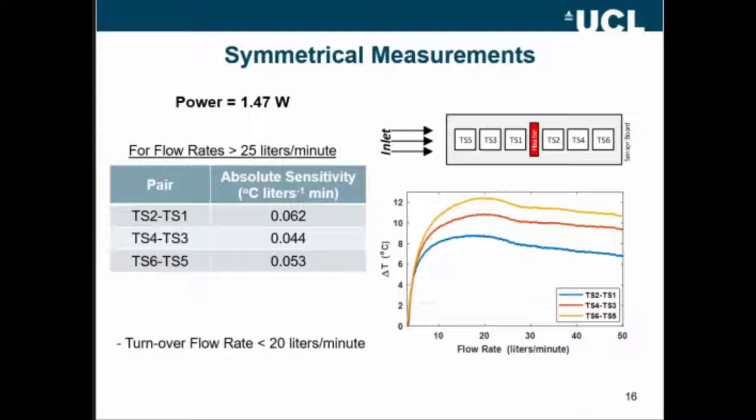And just below that is the output of the flow sensor for flow rate from 0 to 50, for the symmetrical pairs of temperature sensors. As it was expected, it's quite expected output, increase quickly, reach a maximum, the turnover flow rate, and then it slowly decreases.